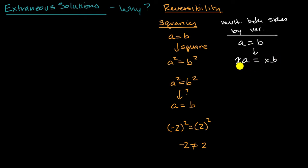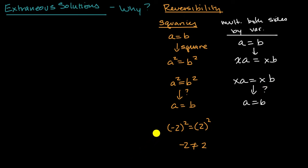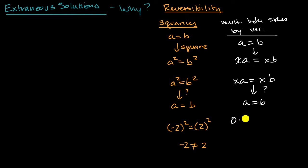But the reverse isn't always the case. If x times a is equal to x times b, is it always the case that a is equal to b? The simple answer is no. For example, what if a was two and b is three, and the variable x just happened to take on the value zero? We know that zero times two is indeed equal to zero times three, but two is not equal to three.